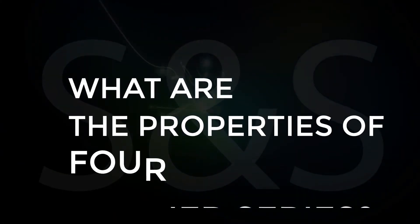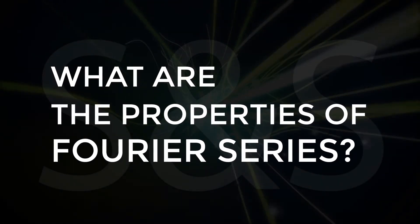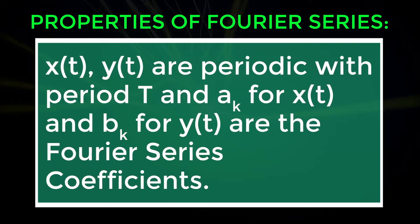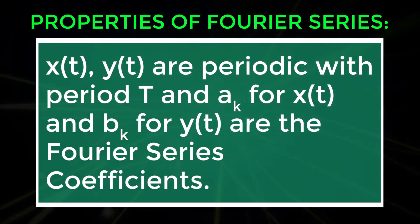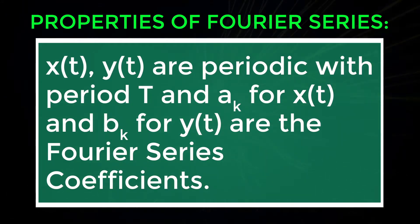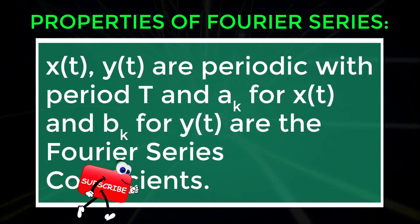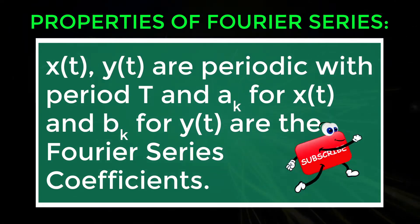What are the properties of Fourier series? X of t and Y of t are periodic with period T, and ak for X of t and Bk for Y of t are the Fourier series coefficients.